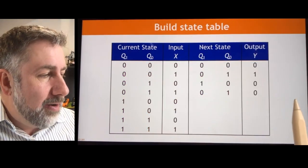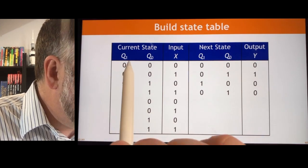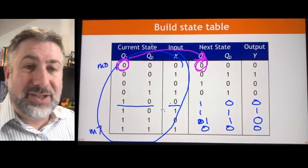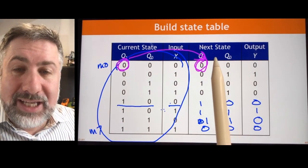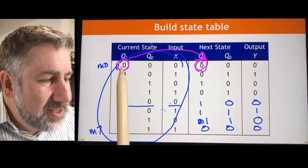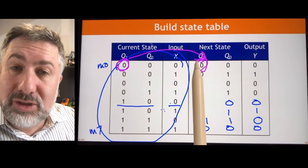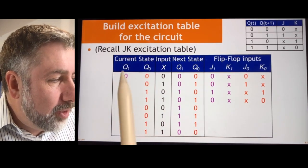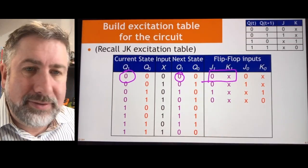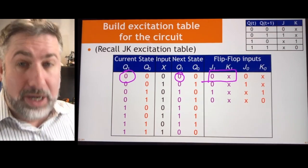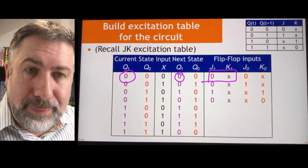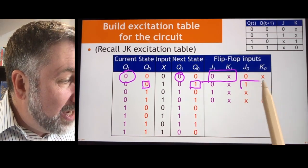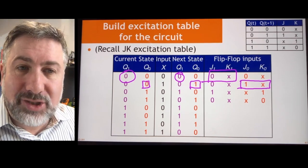For each pair of transitions, if I'm in state 0 and I want to go to state 0, I need to cause that transition with particular J and K inputs. If I'm in state 0 and I want to be in state 0, there are two ways to do that: I can either hold or reset. So you set J to 0, K to don't care, because there are two possibilities to make that transition. Similarly, if I'm in state 0 and I want to go to state 1, I can either toggle or set — so J is 1, K is don't care.